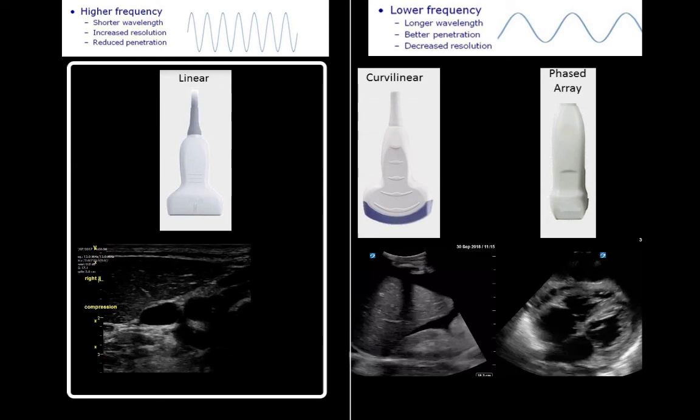It is less commonly used to look in the chest, but our colleagues in radiology will often use it to procedurally guide needle insertion to drain pleural effusions and ascites. This is not commonly done in the critical care environment, but seemingly the radiologists love it.